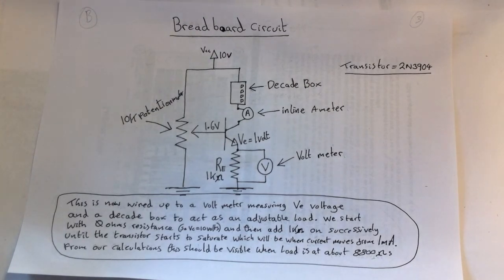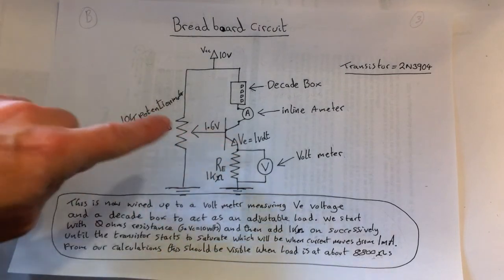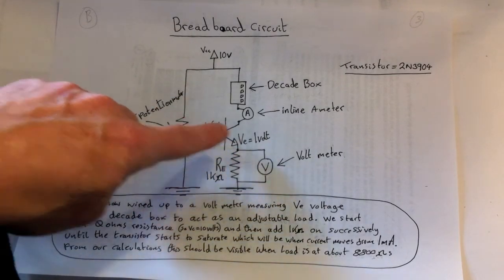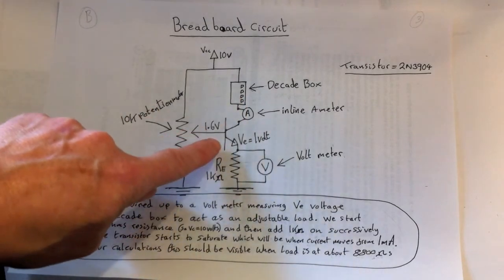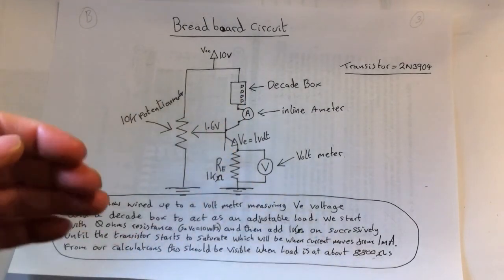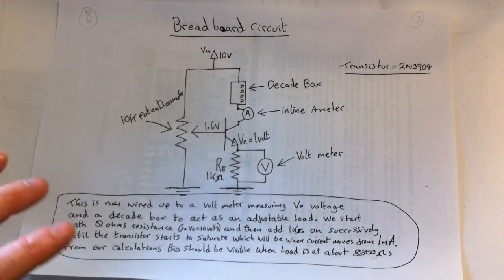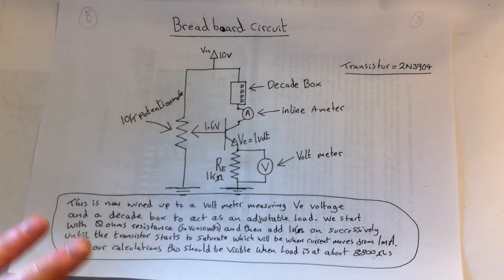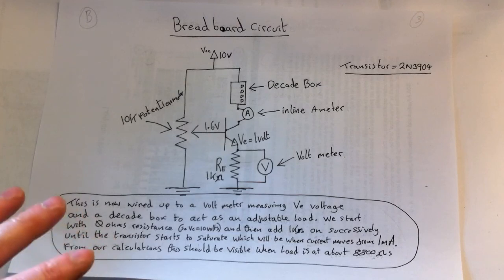When we wire this up we can then go through the decade box, go from 0 to 1000 to 2000 to 3000 to 4000 up to 9,000, 10,000, and we can then see if the milliamp is maintained and the 1 volt is maintained, and it should be until we get saturation. So let's go ahead and look at the lab, the quick lab here, and just verify that that's what we do see for this current source.